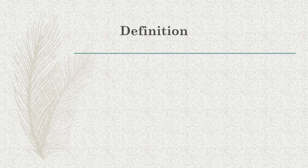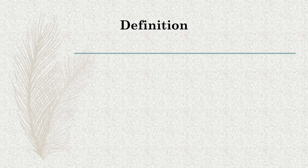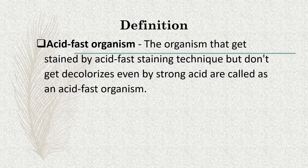Let's see the definition. When we use acid-fast staining technique, we differentiate two types of microorganisms: acid-fast and non-acid-fast. The first one is acid-fast organism — the organisms that get easily stained by using acid-fast staining technique but don't get decolorized even by strong acid are called acid-fast organisms. The organisms which get stained but don't get decolorized by strong decolorizing agents are called acid-fast organisms.